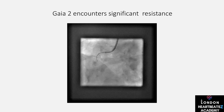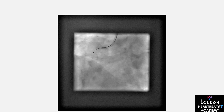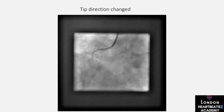Now let's talk about wire shaping, a critical skill in CTO procedures. The Gaia wire is a fantastic tool with a pre-shaped micro-cone tip that retains its shape well. This feature is invaluable for maintaining control and precision during the procedure — it's like having a reliable compass on a challenging hike.